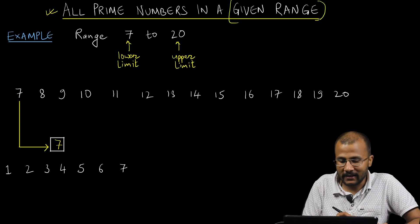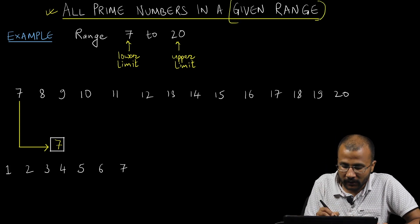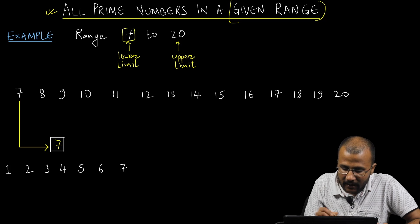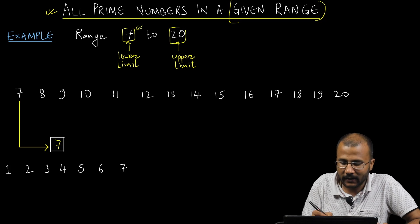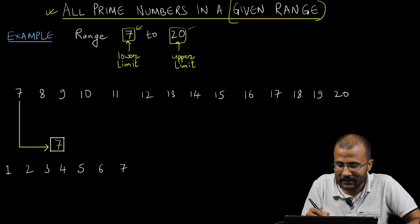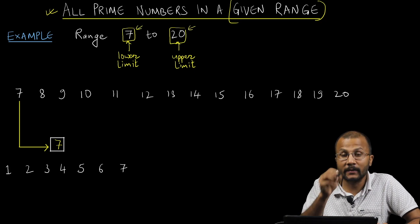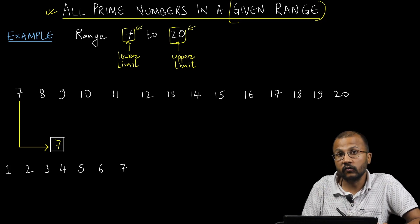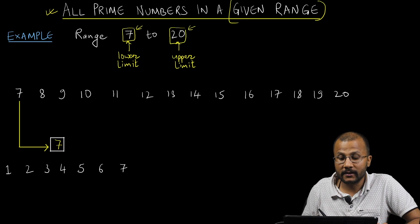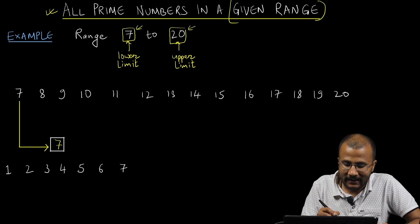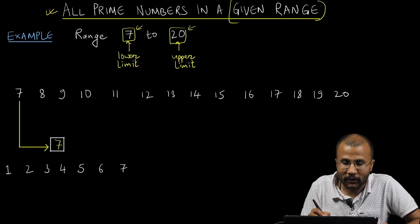Whenever I talk about range, I'll be given the lower limit of the range and the upper limit of the range. Let's say the lower limit here is 7 and the upper limit is 20. That means I need to find all the prime numbers between 7 and 20.